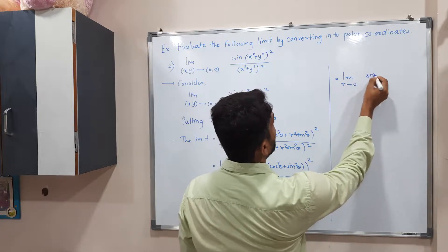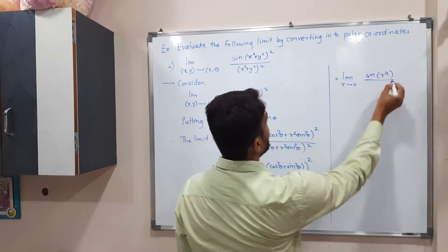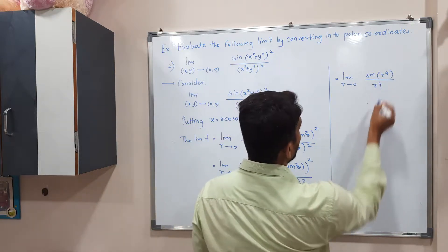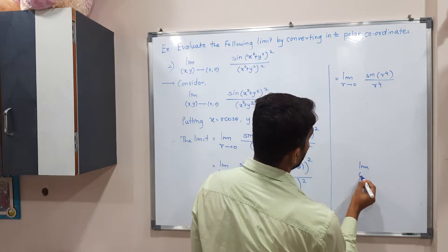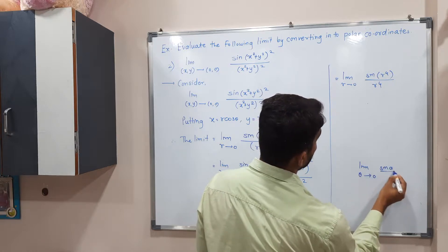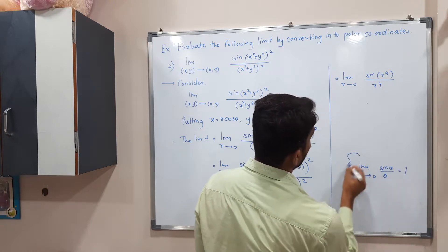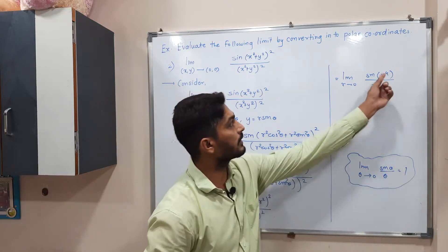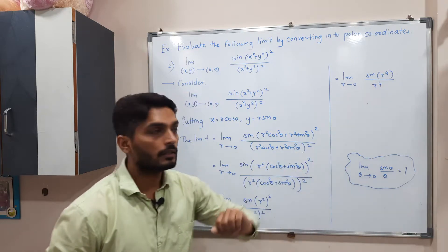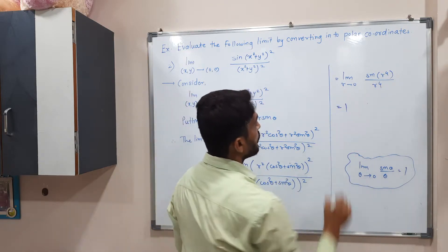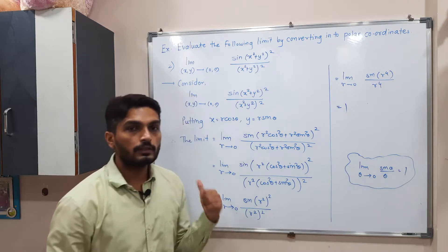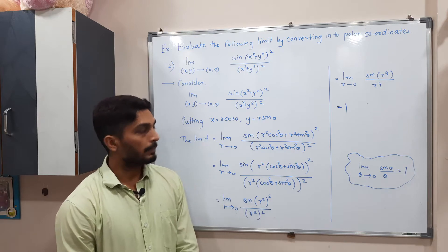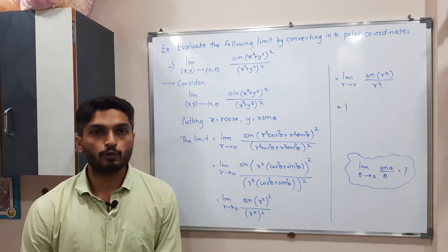So the limit becomes: limit r tends to zero of sin(r⁴) / r⁴. We know the standard formula: limit θ→0 of sin(θ)/θ = 1. Here the angle in the sine and in the denominator are the same, so by that formula the limit equals 1. Therefore the value of the given limit is 1. That's how we solve both problems.